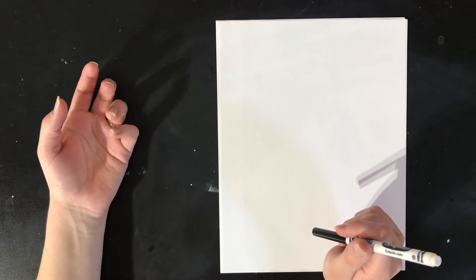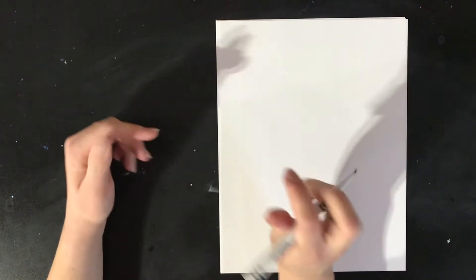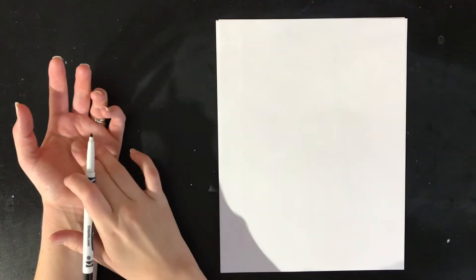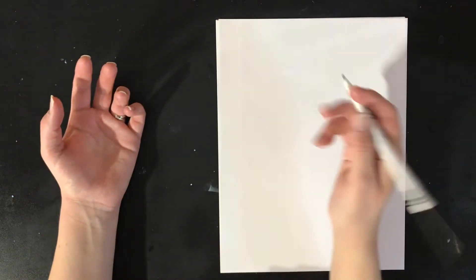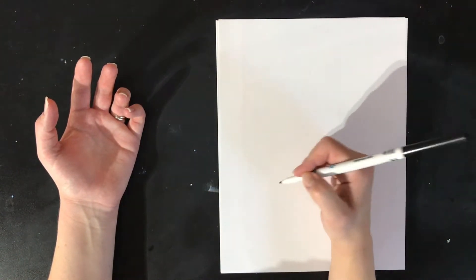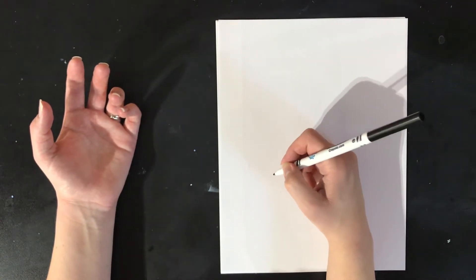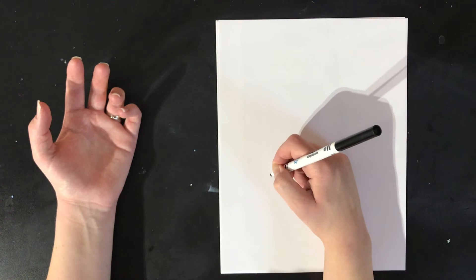I'm just going to lay my hand down like this and I am not going to look at my paper at all while I'm drawing. I'm going to keep my eyes on my hand that I'm drawing and it's going to look kind of crazy and not like a regular hand drawing when I do this. So not looking at my paper, you shouldn't be looking at yours either.